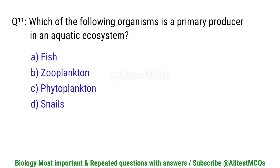Question number 11. Which of the following organisms is a primary producer in an aquatic ecosystem? Right option is C. Phytoplankton.